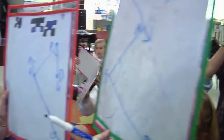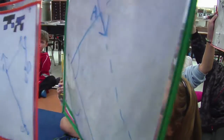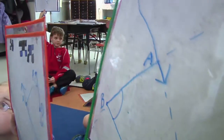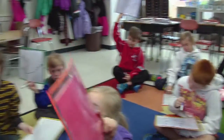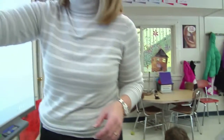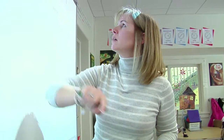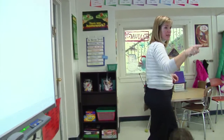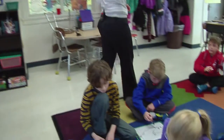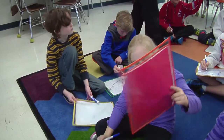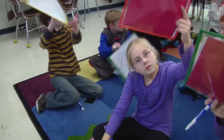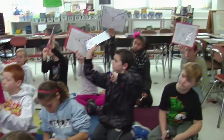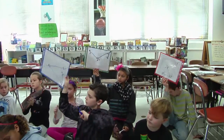Good, nice. Are there more than one angles on your board? Yes. See if you can find another one. And if you find it, what do you need to put in the middle? Put the arc in the middle. Nice. Perfect.